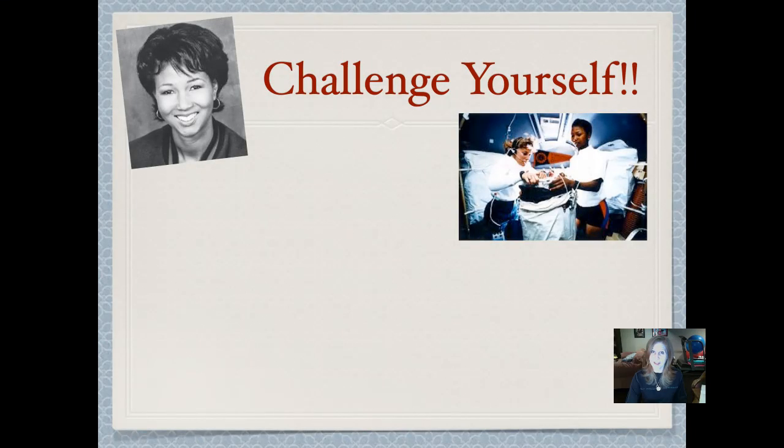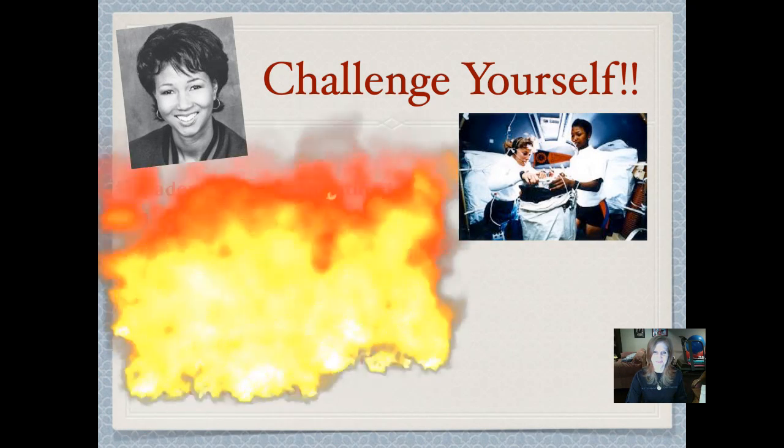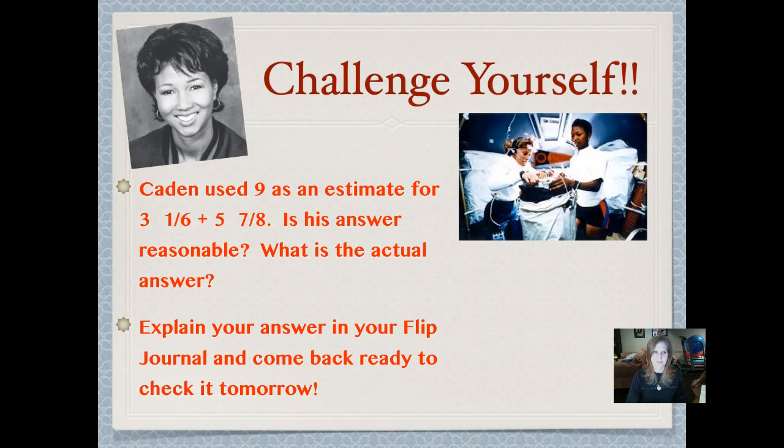It's time to challenge yourself. Caden used 9 as an estimate for 3 and 1 6th plus 5 and 7 8ths. Is his answer reasonable? What is the actual answer? I want you to figure out if the estimate is reasonable before you find the actual answer. Otherwise, you're not truly estimating. Explain your answer in your flip journal and come back tomorrow ready to check it.